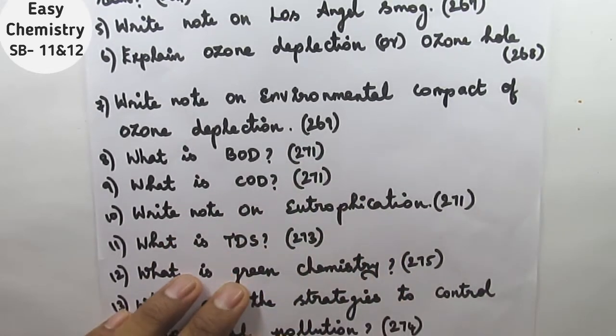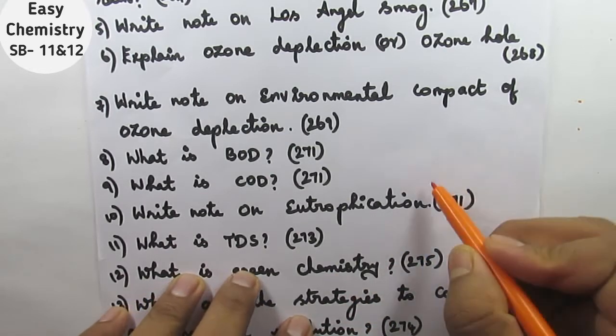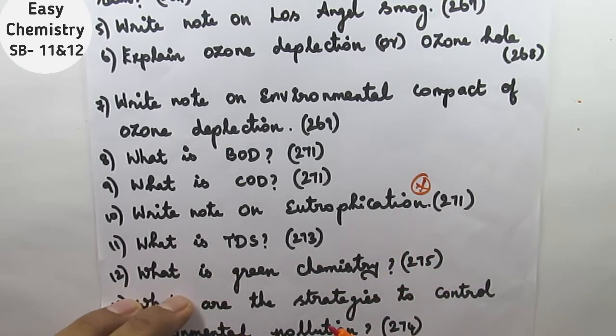Question number ten, write note on eutrophication. This is very very important. You should definitely study this. Greenhouse effect, eutrophication, ozone hole - these are very important topics in this chapter.